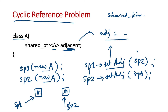Inside A1 there is an adjacent shared pointer referring to A2, and inside A2 there is a shared pointer referring back to A1. This creates a cyclic dependency: A1 holds a reference to A2 and A2 holds a reference to A1. The memory will never be freed, causing a memory leak — which violates the primary goal of smart pointers, which is to handle memory correctly.